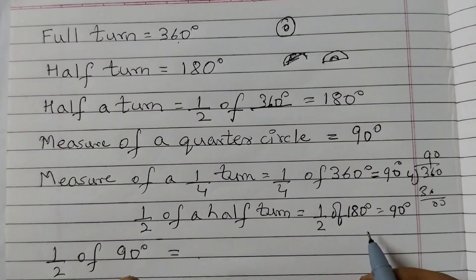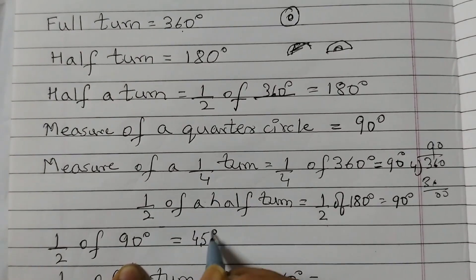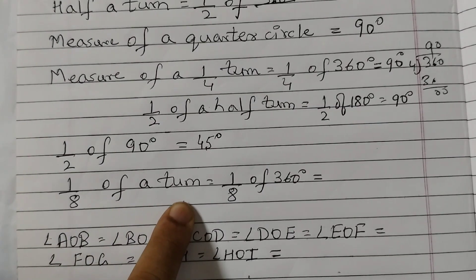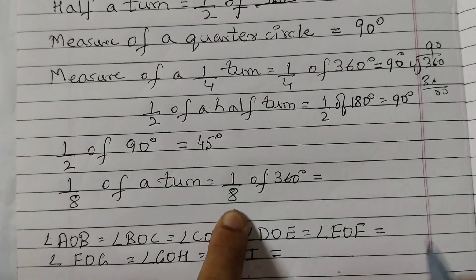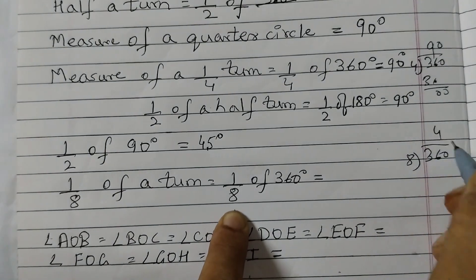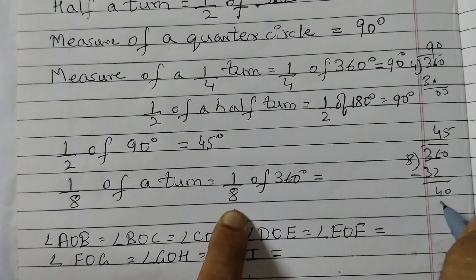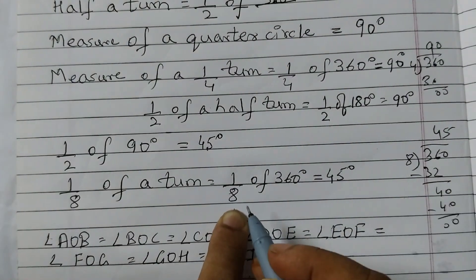Half of 90 degrees: 90 degrees divided by 2 will be 45 degrees. One-eighth of a turn: turn is 360 degrees, so 360 divided by 8 equals 45 degrees.